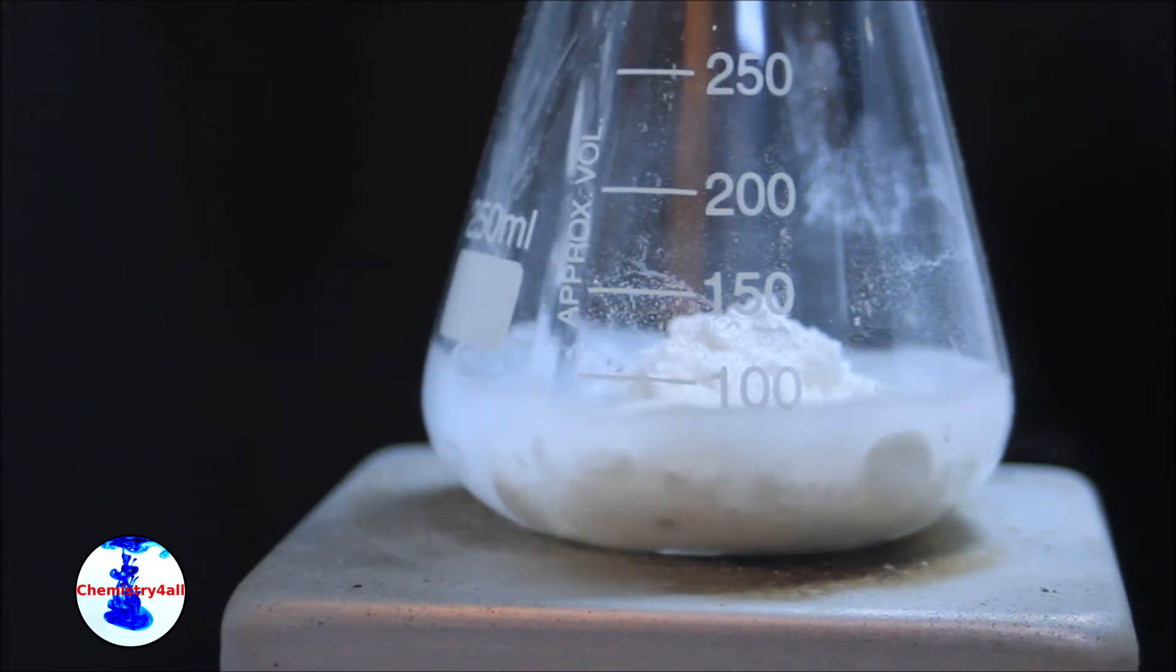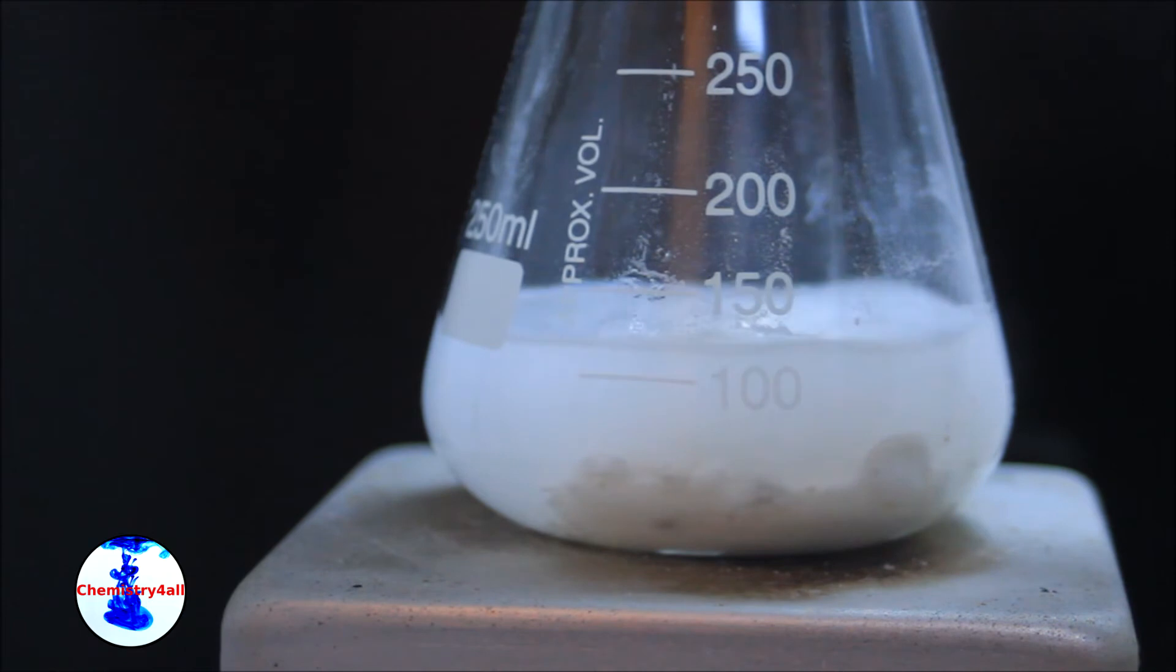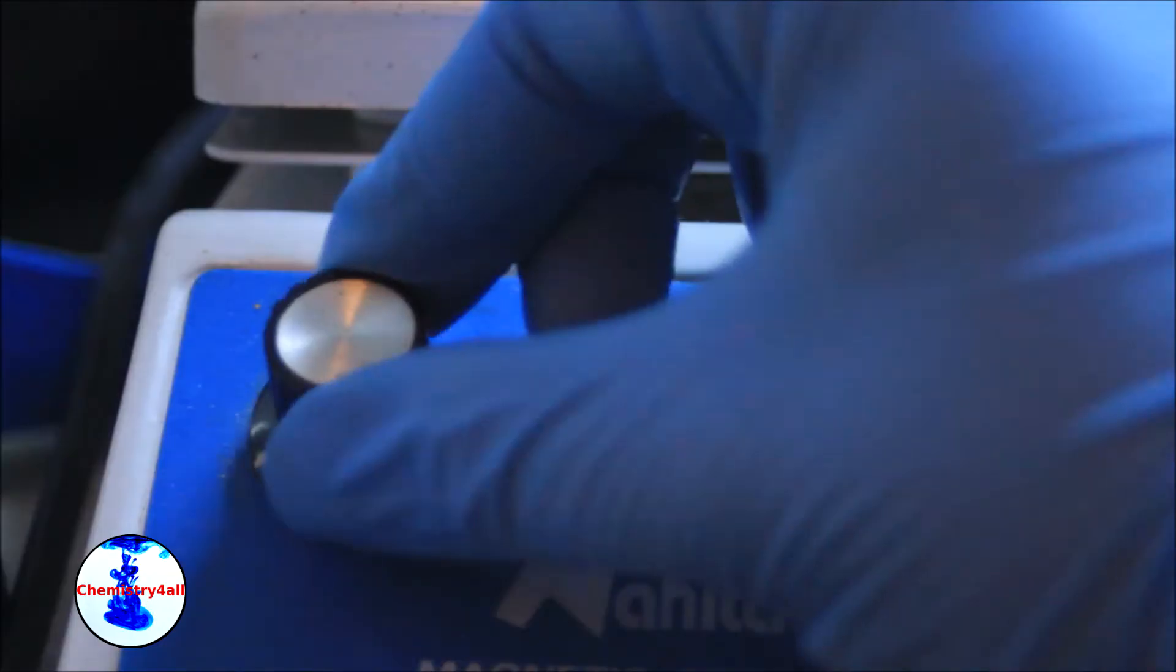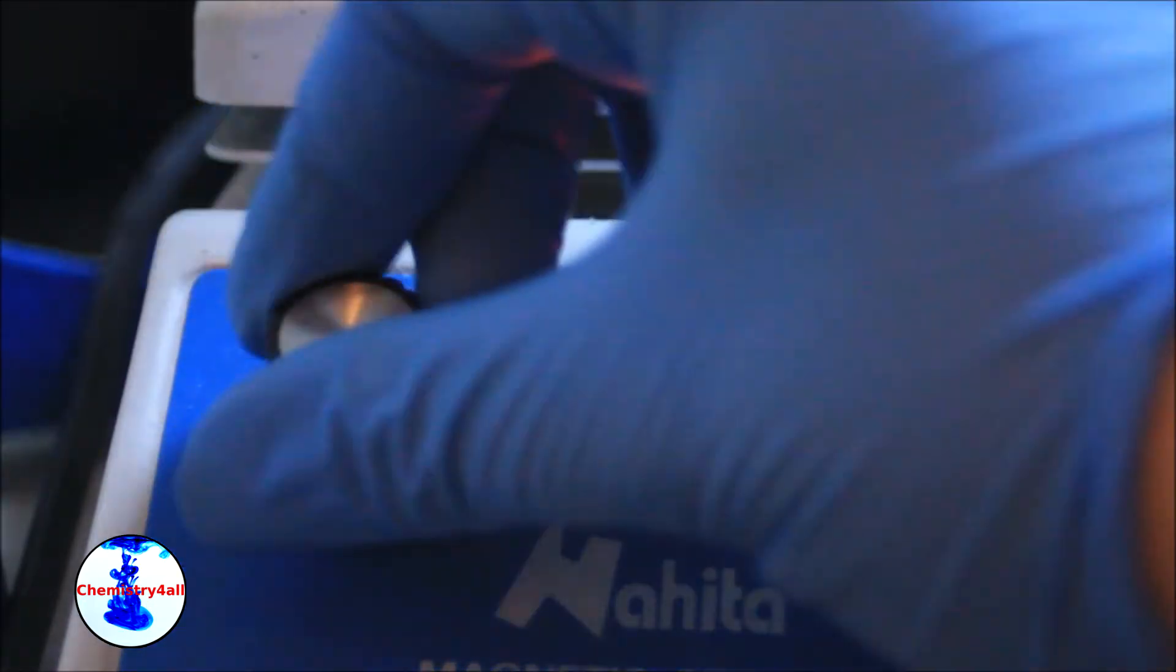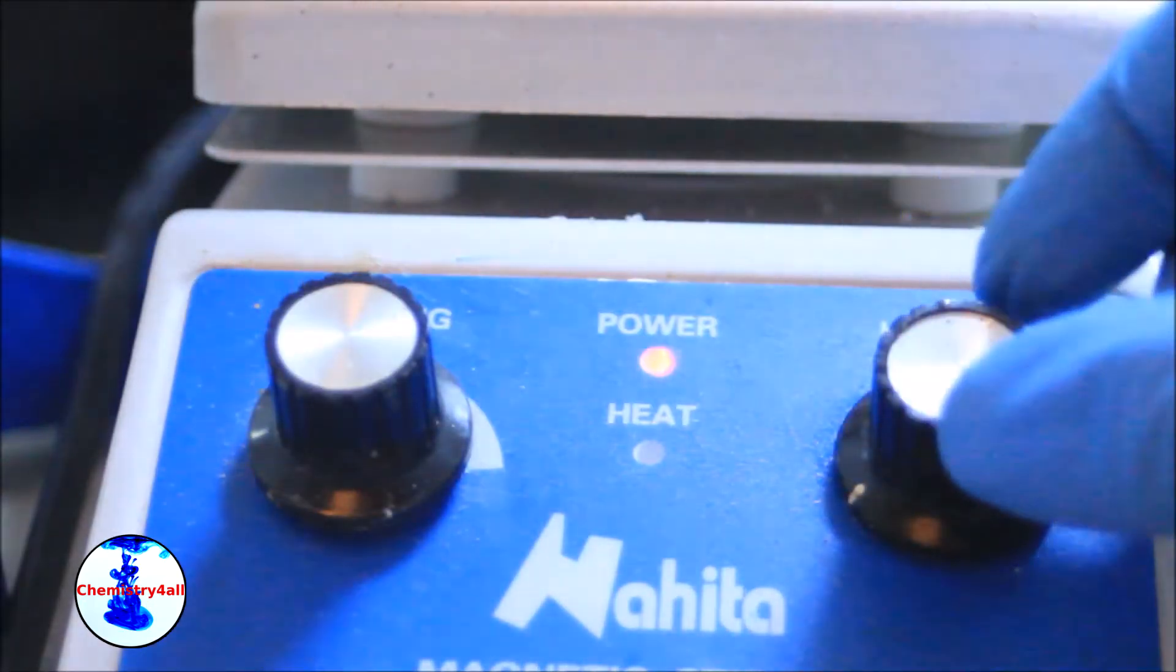Finally a reflux condenser is attached on top of the flask. This will keep a constant solvent level during the extraction. The system is then heated under constant stirring for about an hour and a half.